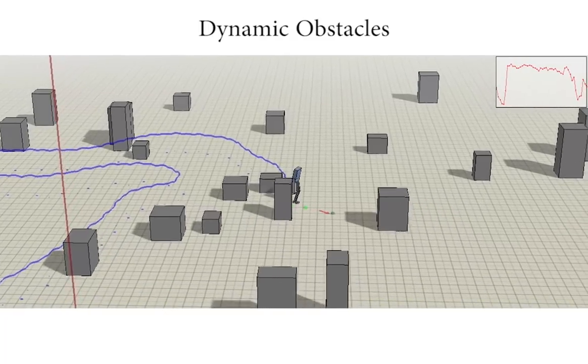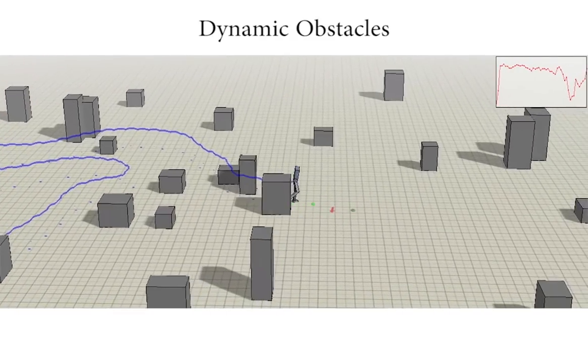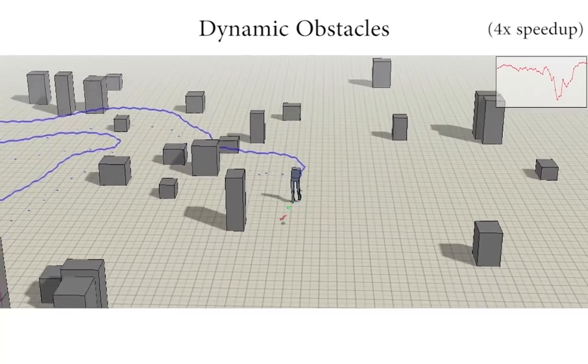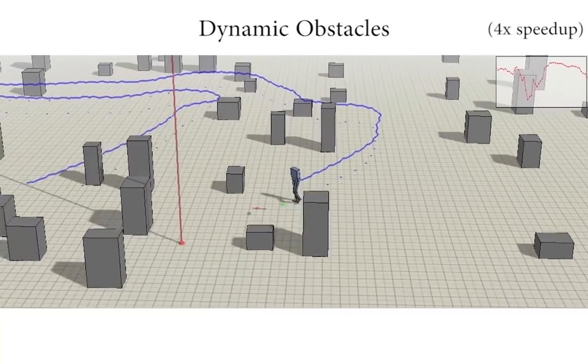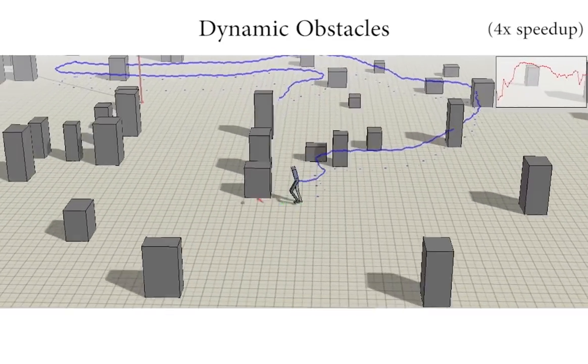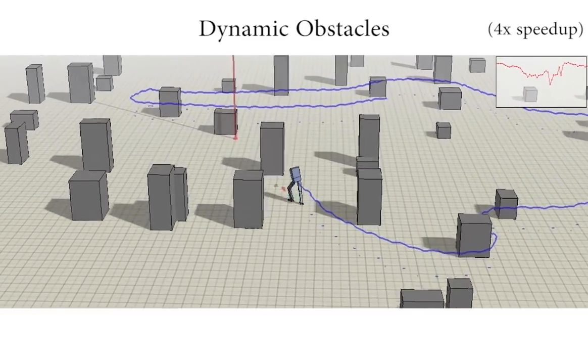For this task, the height map input feature is exchanged for a velocity map of the obstacles. After training, the high-level controller has learned to navigate to the target while avoiding moving obstacles.